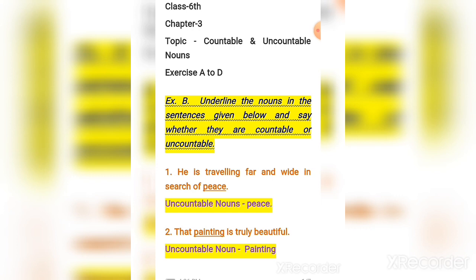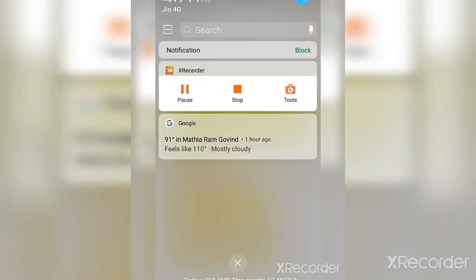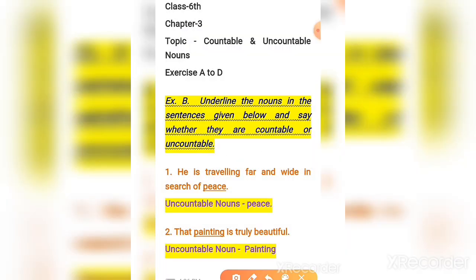Now it is exercise B, which says: underline the nouns in the sentences given below and say whether they are countable or uncountable nouns. Number one: 'He is traveling far and wide in search of peace.' The word 'peace' is an uncountable noun. Number two: 'That painting is truly beautiful.' The word 'painting' is an uncountable noun here.